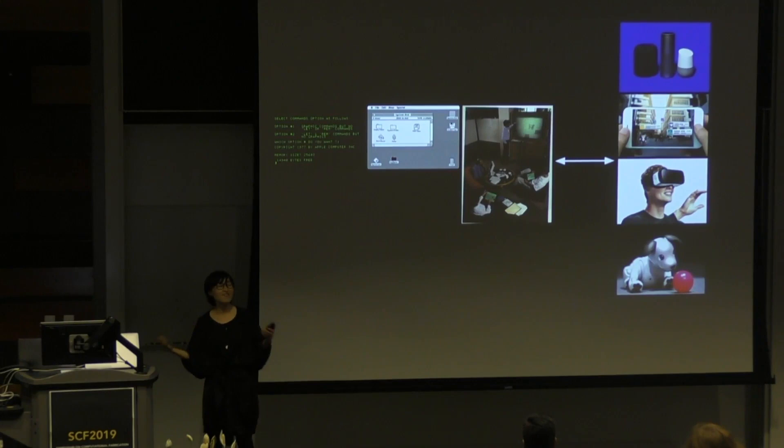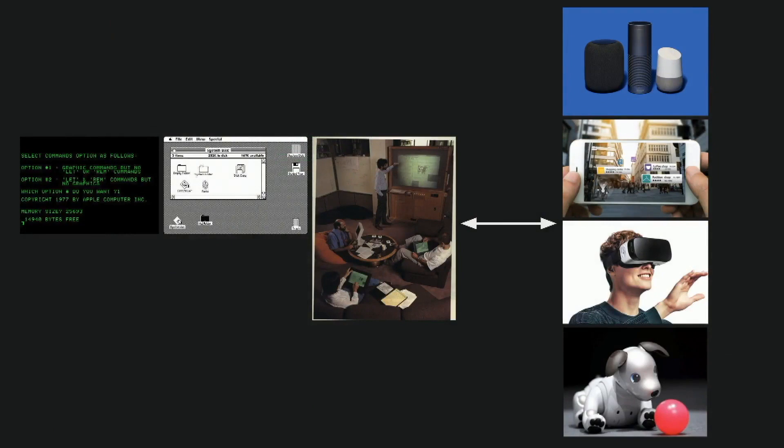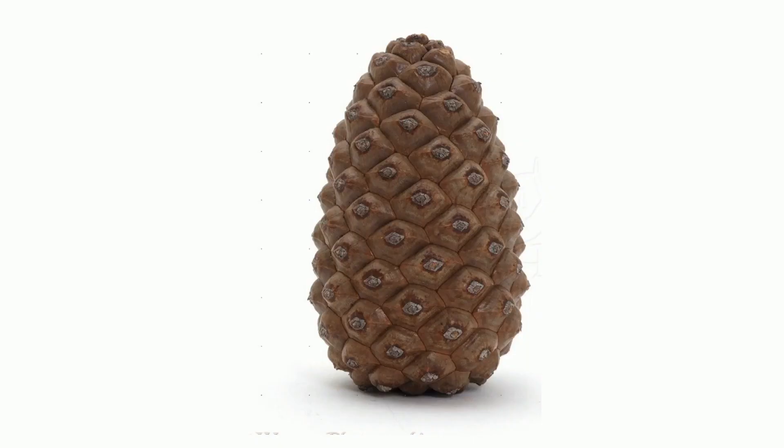We are moving into a new paradigm of different varieties of interfaces that allow people to engage with computation. That includes a lot of gadgets and technology — virtual reality and even physical embodiments like personalized robots. These are all ways we perceive as interfaces to access computation.